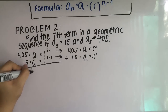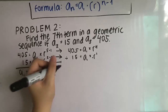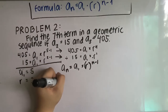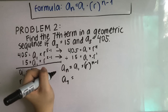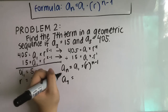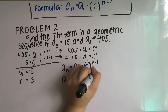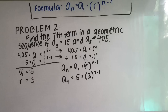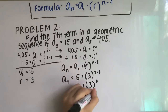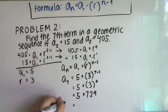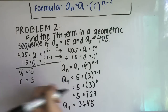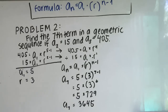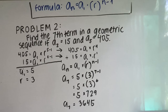Now that we have our first term and our common ratio, it will be easier for us to solve for the seventh term. From the formula a sub n equals a sub 1 times r raised to n minus 1, we have: a sub 7 is equal to 5, the first term, times 3, the common ratio, raised to 7 minus 1. Evaluating that, we get 5 times 3 raised to 6. 3 raised to 6 is equal to 729. 5 times 729 is equal to 3,645. That is our seventh term.